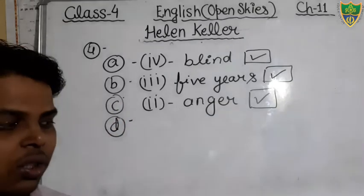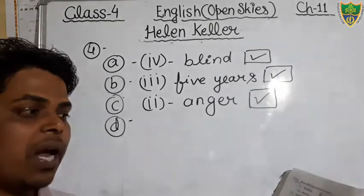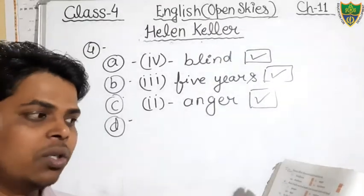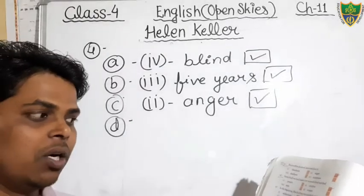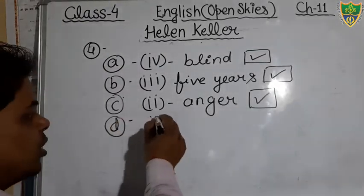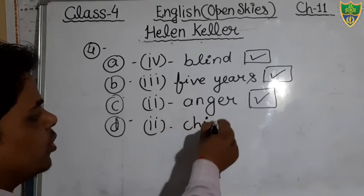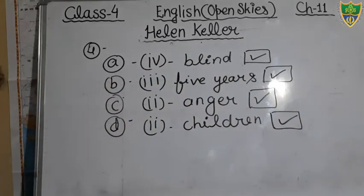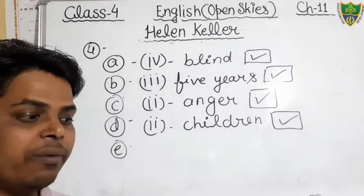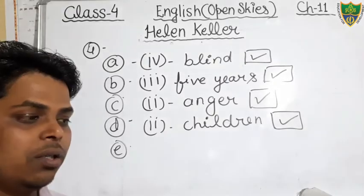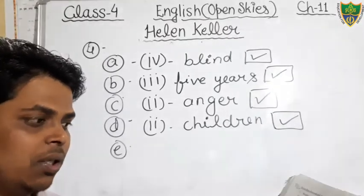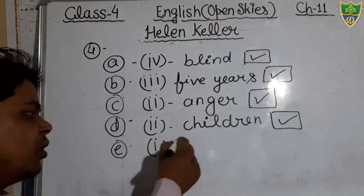Question D: 'Annie Sullivan had learnt how to teach blind and deaf blank.' The options are people, children, men, women. Option number 2, 'children,' is the correct option. Annie Sullivan knew how to teach blind and deaf children. Question E: 'In the beginning, Miss Sullivan was unable to make Helen blank.' The options are understand, know, identify, speak. Option number 1, 'understand,' is the correct option.